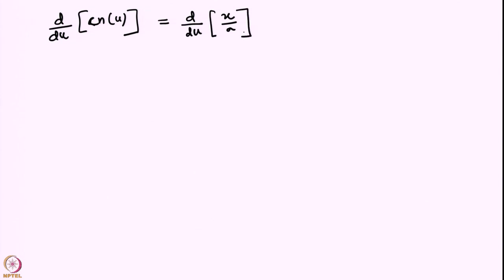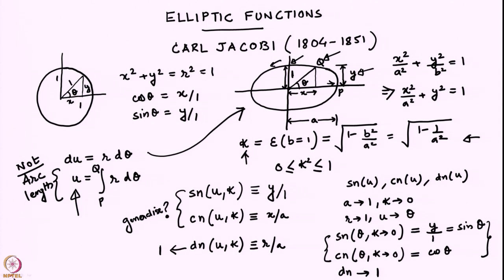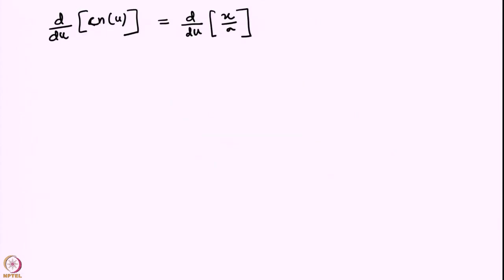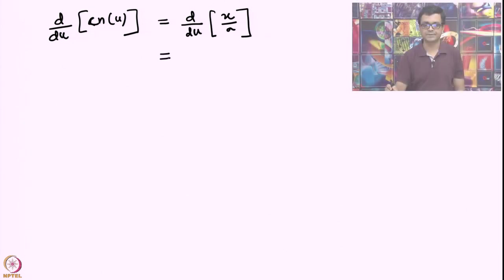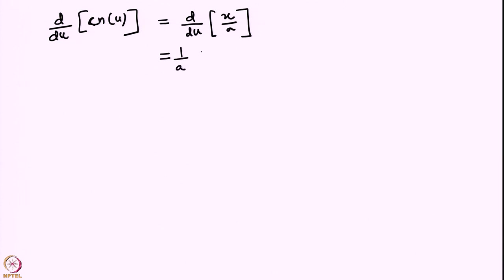Recall that a is related to k. We defined k in terms of a when we obtained the elliptic functions, and k is related to a in this manner. So if I am holding k constant, this implies I am holding a constant. Therefore a is a parameter of the ellipse — I am on the same ellipse, not changing it — and a can be pulled out, so this is just dx/du.